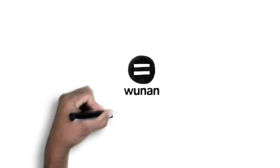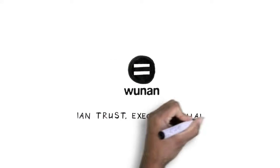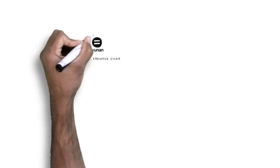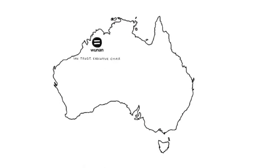G'day, I'm Ian Trust, the Executive Chair of Woonan Foundation, a not-for-profit Aboriginal organisation based in Kununurra in the East Kimberley region of Western Australia.